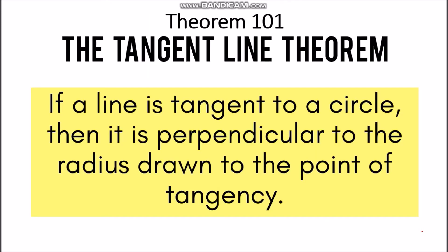First, we have Theorem 101, which is the tangent line theorem: if a line is tangent to a circle, then it is perpendicular to the radius drawn to the point of tangency. So if we have a line that is tangent to a given circle, then the radius drawn to the point of tangency is perpendicular to it.